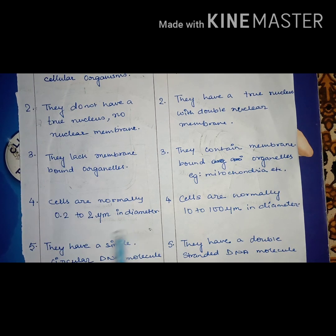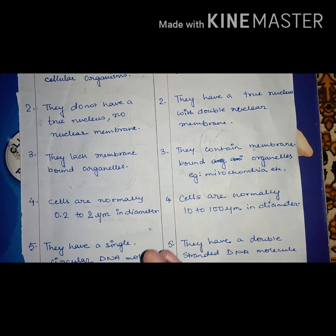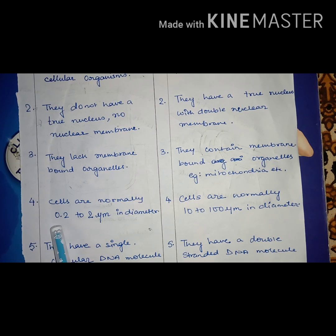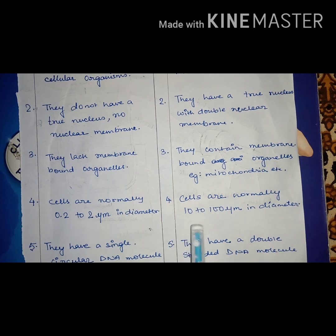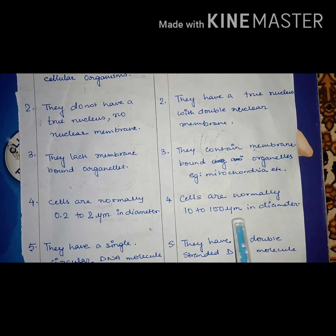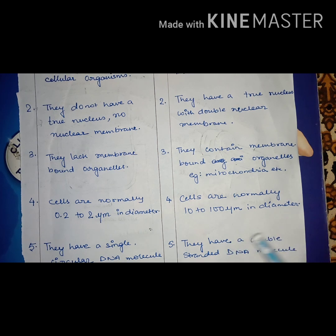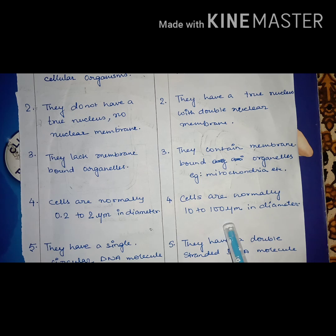Prokaryotic cells are normally smaller with respect to eukaryotes — they can be from 0.2 to 2 micrometers in diameter. Whereas eukaryotic cells are larger in size, ranging from 10 to 100 micrometers in diameter.